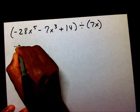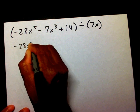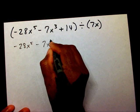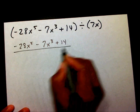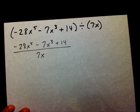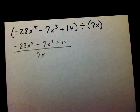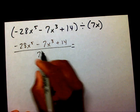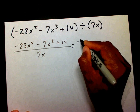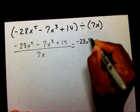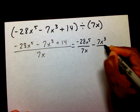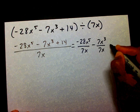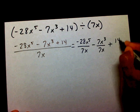So I'm going to write negative 28x to the 5th minus 7x to the 3rd plus 14 divided by 7x. Now I'm going to divide each term by 7x: negative 28x to the 5th divided by 7x, minus 7x to the 3rd divided by 7x, plus 14 divided by 7x.